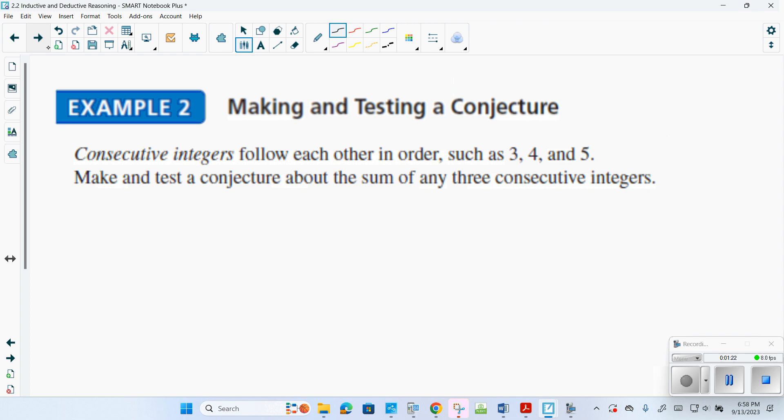Making and testing. Consecutive integers follow each other in order: 3, 4, 5, or 7, 8, 9, or 11, 12, 13. Make a conjecture and test about the sum. If I added all these up, I'd get 12. If I added all these up, I'd get 24. If I added all these up, I'd get 36. So here is my conjecture: if I take the middle number and multiply it by three, it will always be the sum of three consecutive integers.